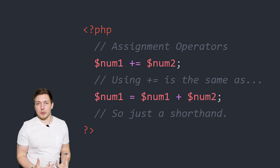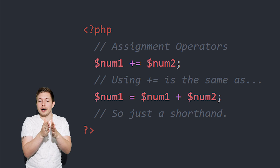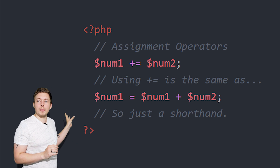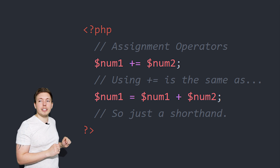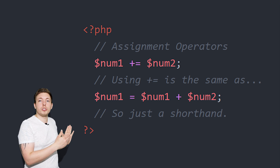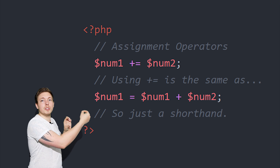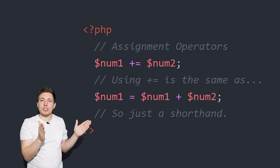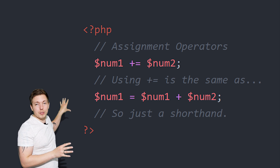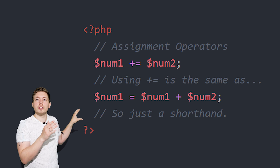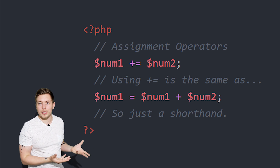Then we have something called assignment operators. These are essentially a shortcut for us in order to perform certain operations faster, so we don't have to write an unnecessary amount of code. In this example, we take num1 and num2, and instead of writing num1 equals num1 plus num2 — which is quite long — we can just use the plus-equal sign to say we want to take this variable and add itself to another variable. Pretty much the same as arithmetic operators, but we make it a little bit shorter.